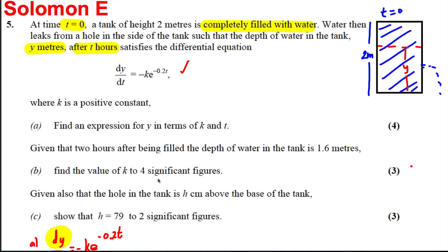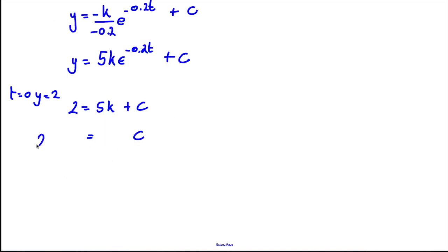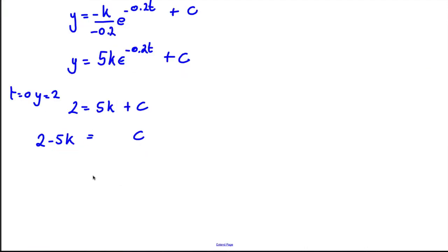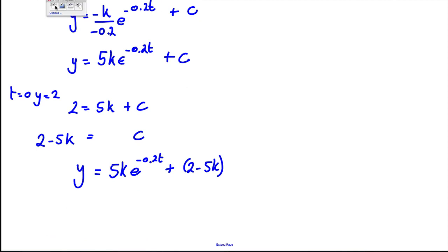Now applying initial conditions: we know y = 2 when T = 0. So 2 = 5k·e^0 + C, which gives 2 = 5k + C, therefore C = 2 - 5k. So the expression for y in terms of k and T is y = 5ke^(-0.2t) + (2 - 5k). That completes part (a).